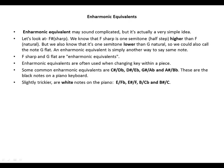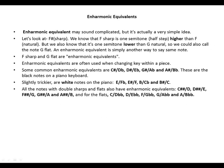Slightly trickier are the white notes on the piano: E becomes F flat, E sharp becomes F, B becomes C flat, and B sharp becomes C. All notes with double sharps also have enharmonic equivalents: C double sharp becomes D, D double sharp becomes E, F double sharp becomes G, G double sharp becomes A, and A double sharp becomes B.